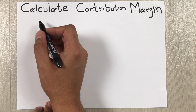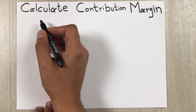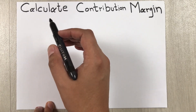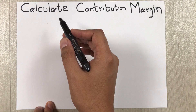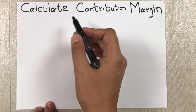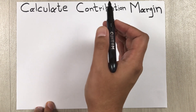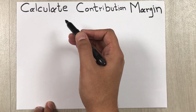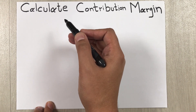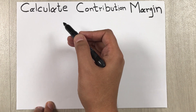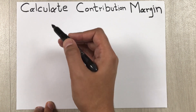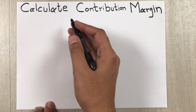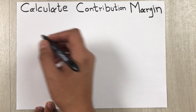Hello guys, I hope you are doing really well. In today's video I am going to show you how to calculate contribution margin. Contribution margin gives you a per-item profitability metric. The formula to calculate the contribution margin is: